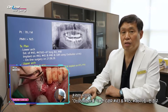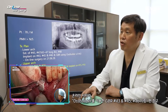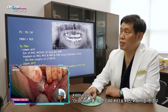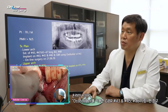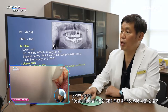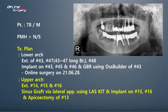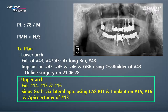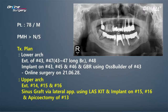This video clip was shown in the Online Surgery course last June, and I'm going to focus on the upper. The treatment plan for the upper: the alveolar bone condition is not very good in number 14, 15, and 16. Extractions will be done. The residual bone height up to the sinus is not significant; therefore, LASKIT will be used for sinus graft.